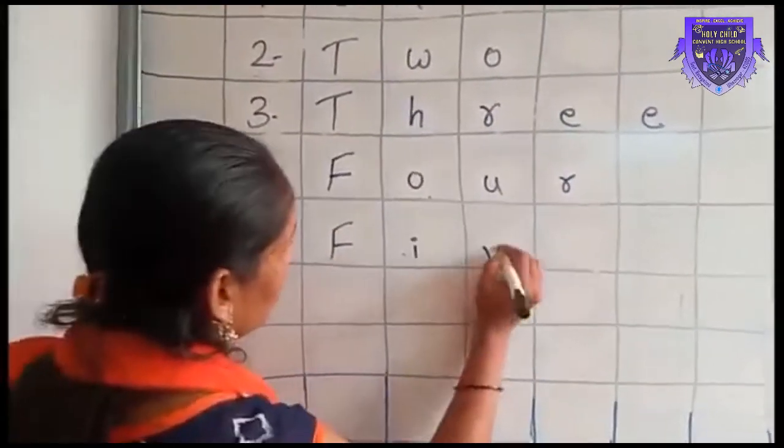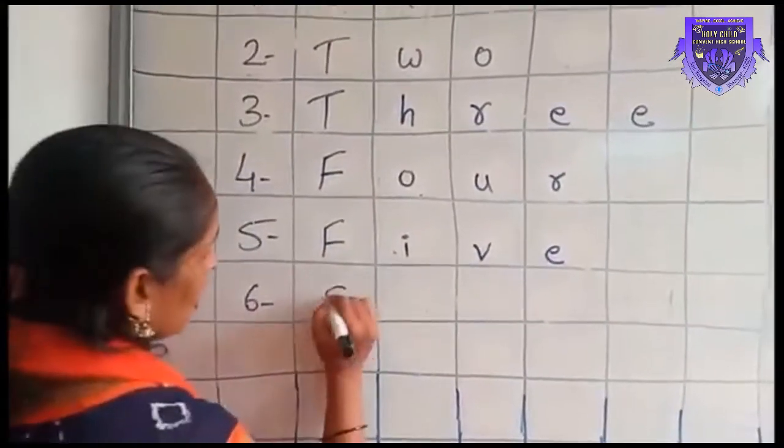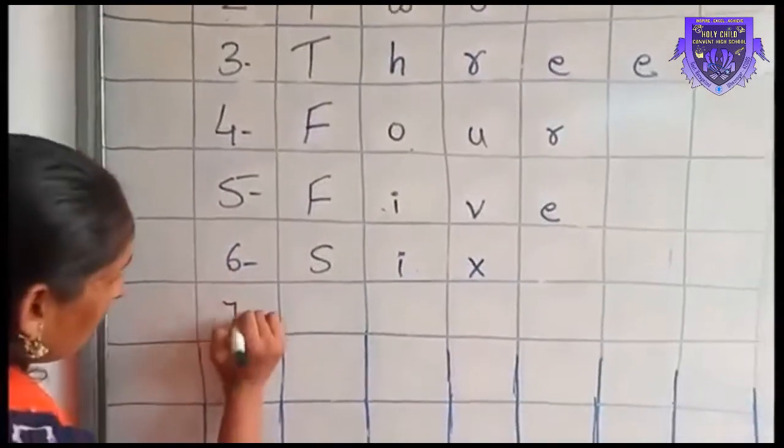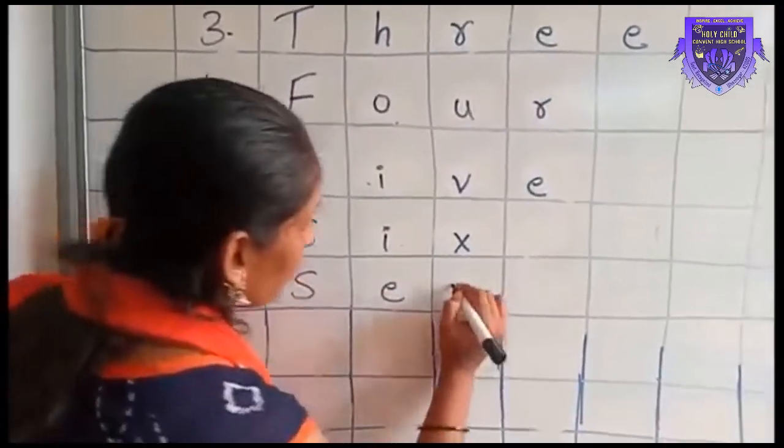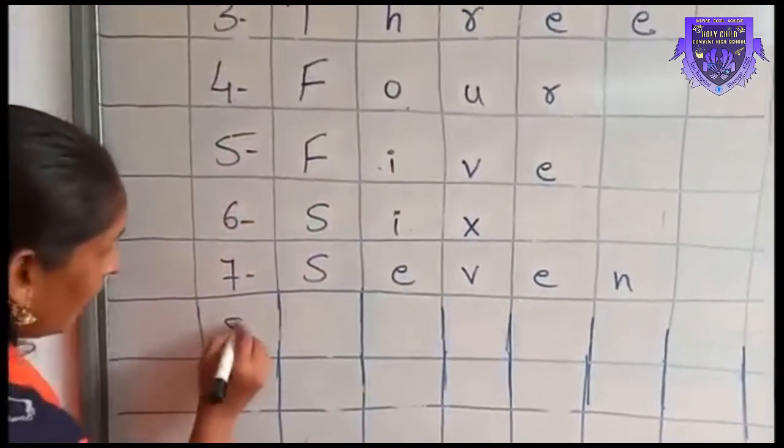Number 5: F-I-V-E, five. Number 6: S-I-X, six. Number 7: S-E-V-E-N, seven.